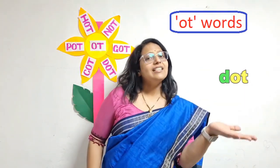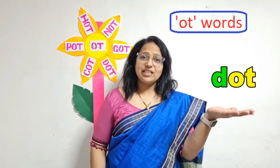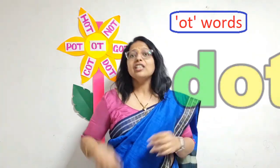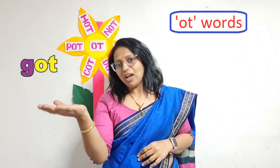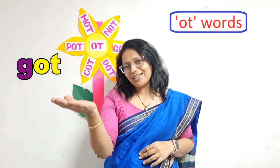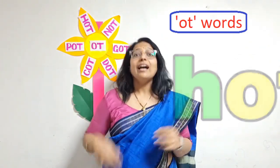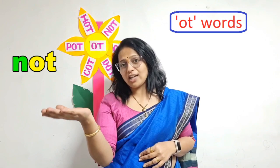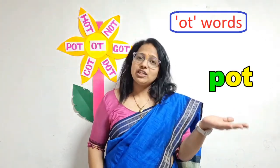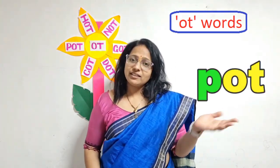C, O, T — Cot. D, O, T — Dot. G, O, T — Got. H, O, T — Hot. N, O, T — Not. P, O, T — Pot. These are the three letter ought words.